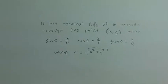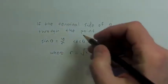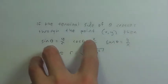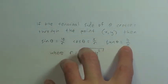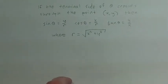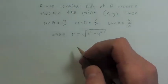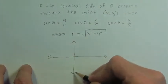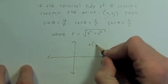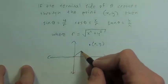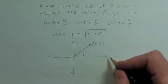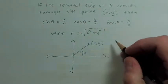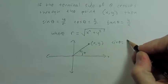So what we have is that if the terminal side of theta crosses through the point (x, y), then sine theta is going to be y over r, cosine theta is going to be x over r, and tangent theta is going to be y over x, where r is the square root of x squared plus y squared. To give an example of what's happening here, if we have a point in quadrant one and I make an angle — we always go from the positive x-axis — then sine of theta is y over r.